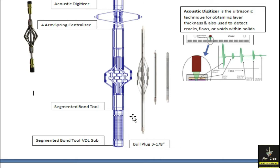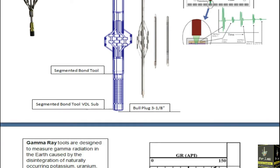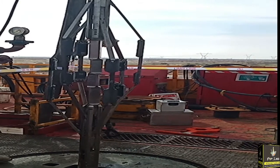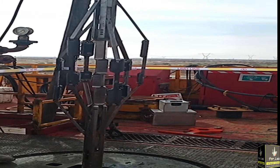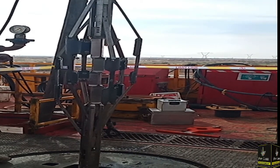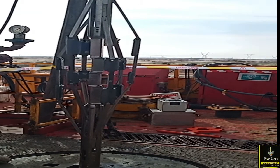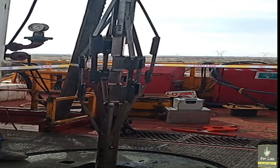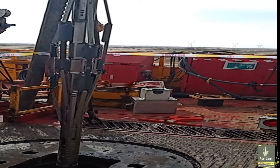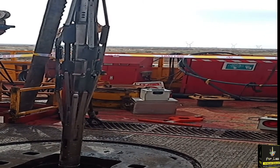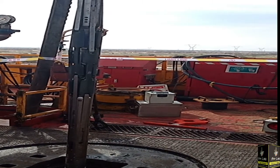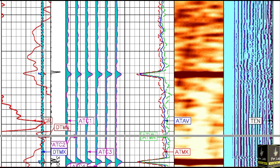The sub is also part of the CBMT tool string, and at the end we use the bull plug. As you can see, the CBMT tool is now open — we have given the command from the wireline logging unit. While running in hole, we keep the CBMT closed, and when we reach the target depth, we open the CBMT tool and take the recordings. Then we close it again before pulling out.